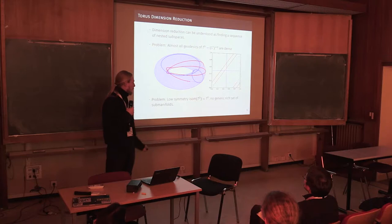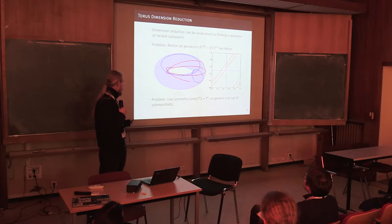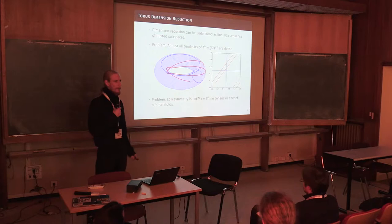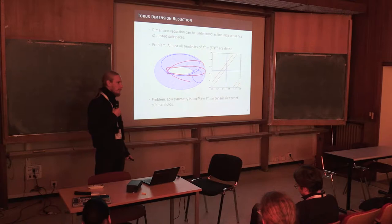one essentially finds a sequence of nested subspaces. But the problem is, for the torus, we don't find a good construction scheme, because almost all geodesics run around indefinitely, like for example this red one here. The blue are two examples of geodesics that don't run around indefinitely, but almost all actually run densely in the torus.